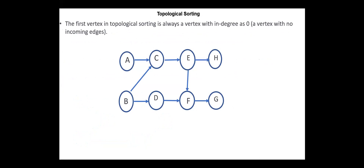The first vertex in topological sorting is always a vertex with in-degree equals to zero, or a vertex with no incoming edges. So in this graph, the in-degree for A is zero, for B is zero as well, for C is two, for D is one, E is one, for F is two, for H is one, and for G is one.